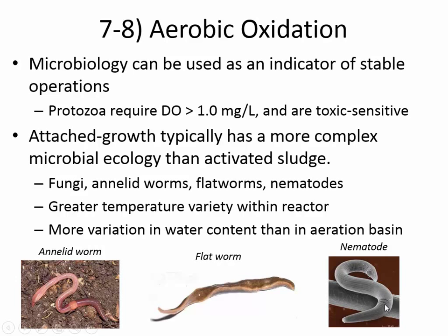An attached growth environment — a trickling filter — is a more varied environment. It has lots of little microclimates inside the reactor. At the edge there may be spots that don't get much water and are especially cool near the concrete, while in the center it may be getting more liquid and might be warmer. You could have completely different ecology at the center of a trickling filter than at the edge or at the surface, and as a result you see different microbiology.